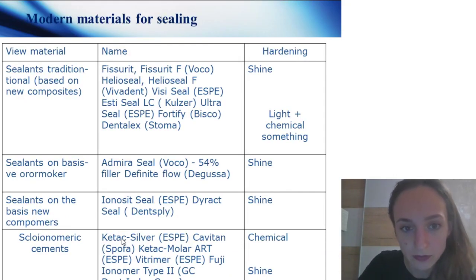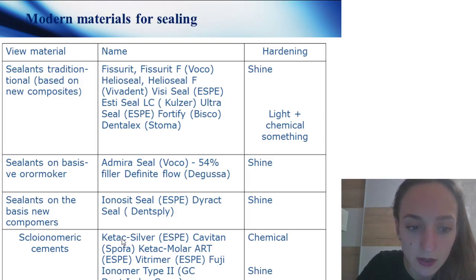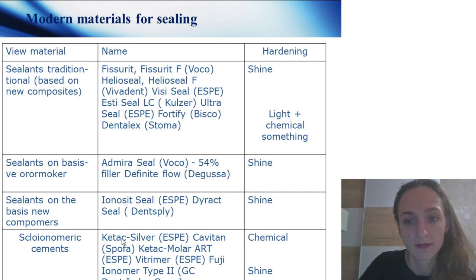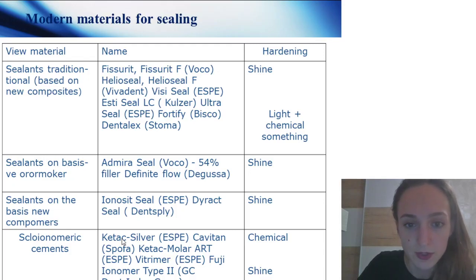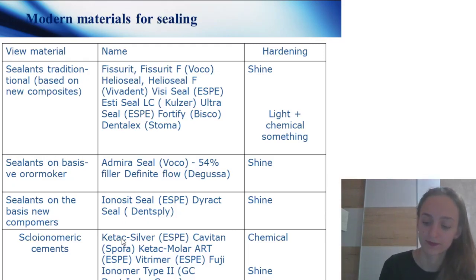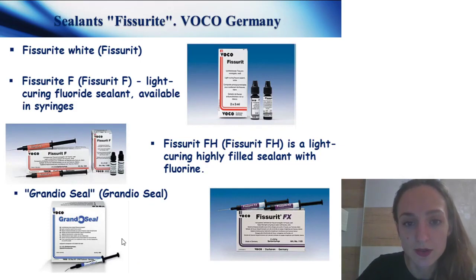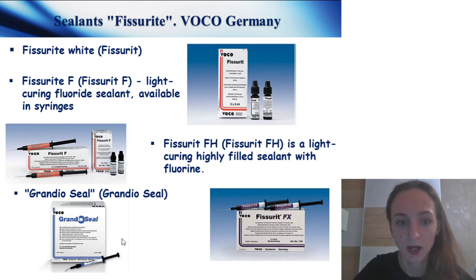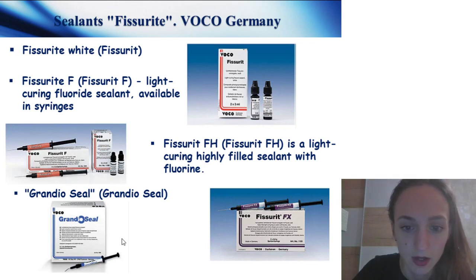Modern materials for ceiling sealants: traditional based on composites, sealant on basis of Omocare, and glass ionomer cement. Table of hardening types and medication names: Fissurit, ST Seal, Ultra Seal, Admira Seal, Ionosit Seal, Ketac Silver, Cavitan, Vitremer, and Fuji. Sealants include Fissurit — available in white and as a light-curing fluoride sealant in syringes — Fissurit FH light-curing, and Grandio Seal.